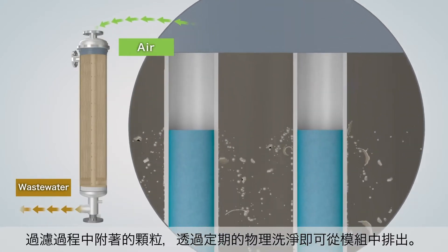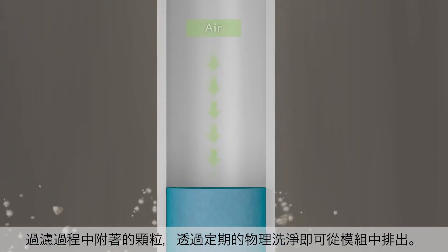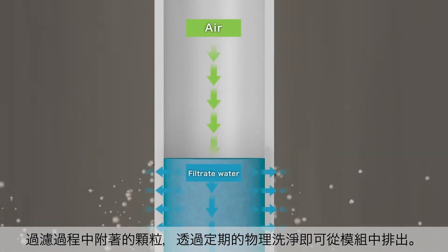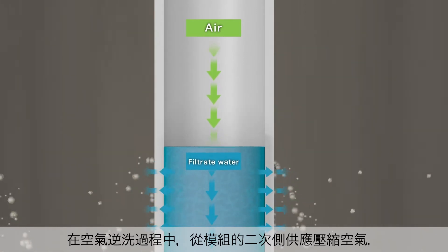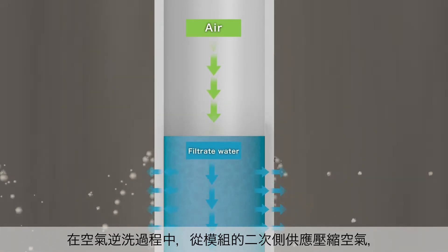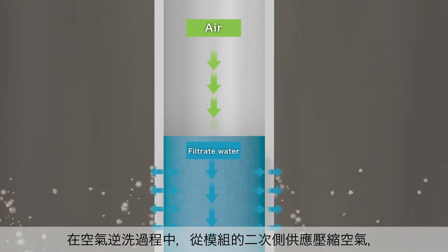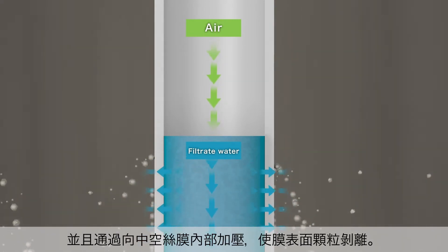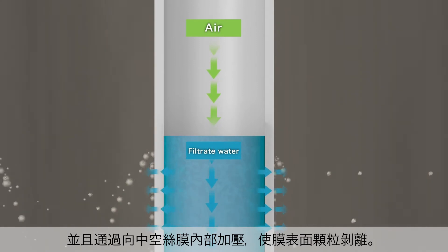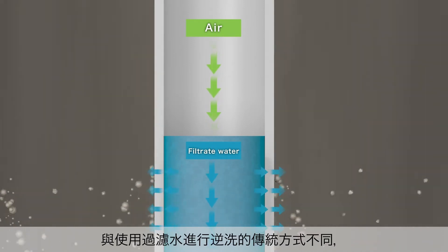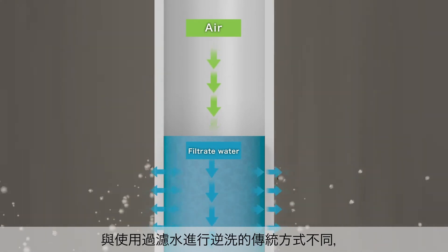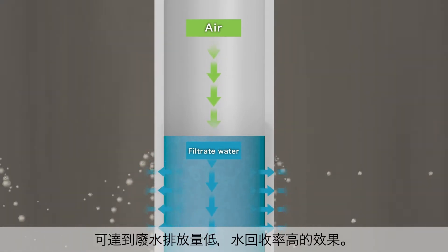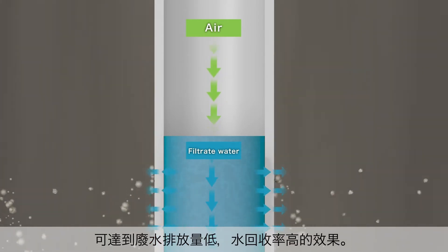The attached particles caused by filtration are removed from the module using physical cleaning. In the air backwash process, compressed air is supplied from the filtrate water side of the module, and by applying pressure to the inside of the hollow fiber membrane, the surface particles are detached. Unlike conventional systems that use filtrate water for the backwash, the volume of discharged wastewater is low and the water recovery rate is high.